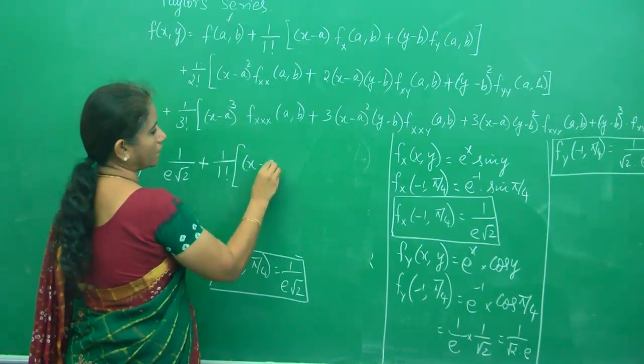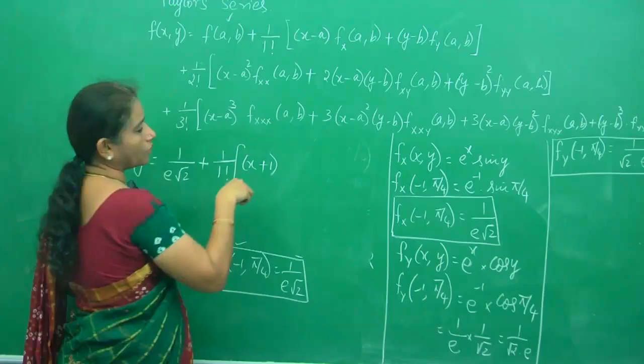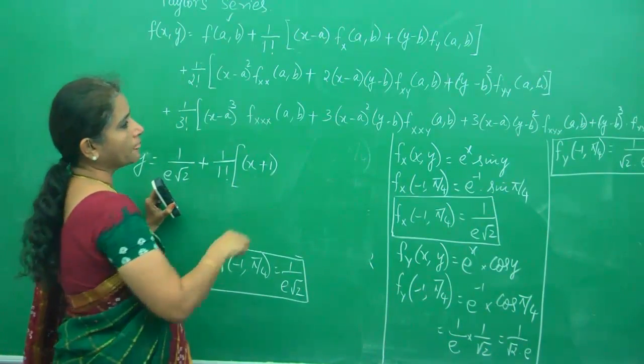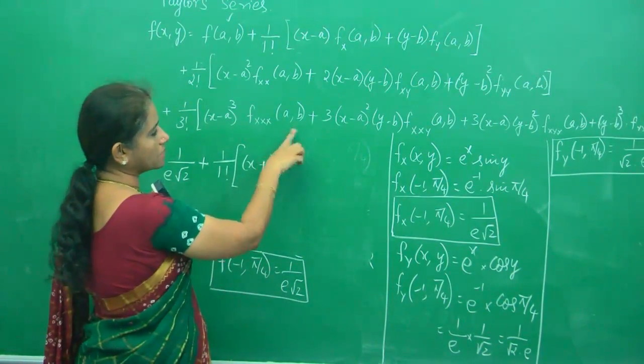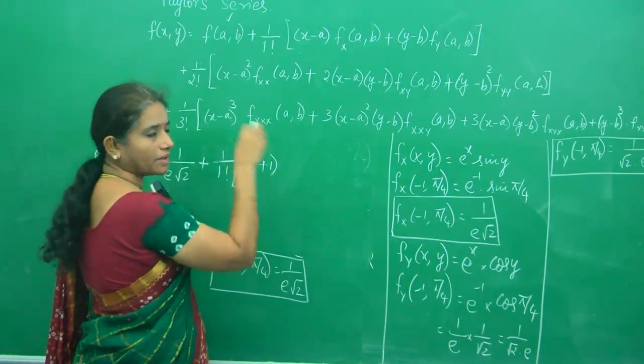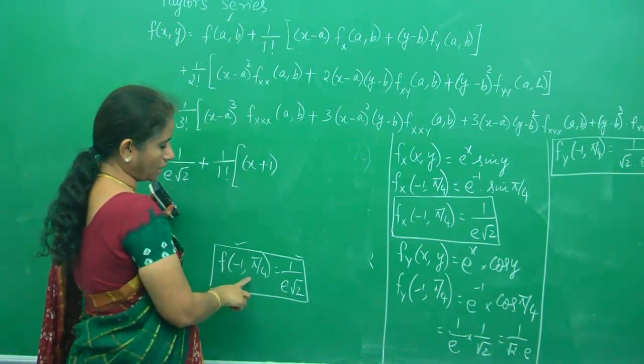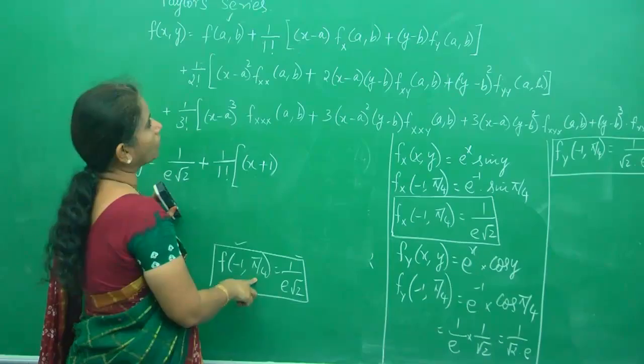a is -1, so negative of negative 1 becomes positive 1. Remember, at the beginning a is -1 and b is π/4.